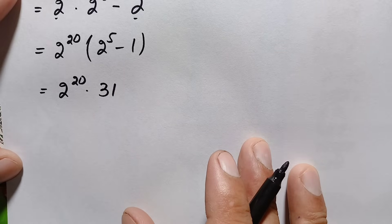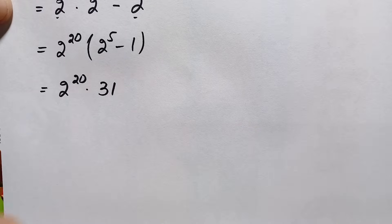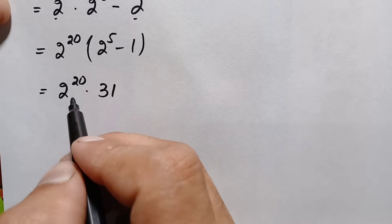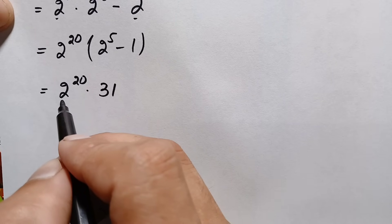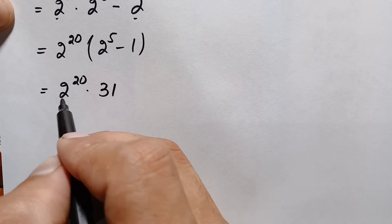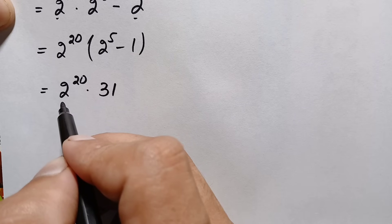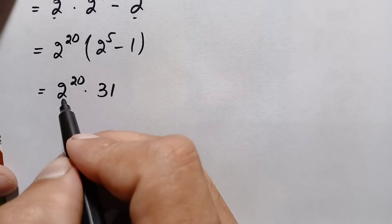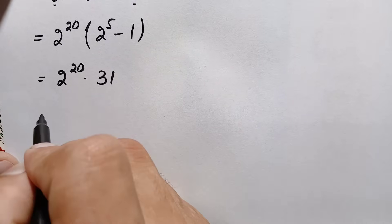Now we need to multiply these two numbers without a calculator. First we will find the value of 2 raised to power 20. We can find this value by multiplying 2 twenty times, but we can also find it using the algebraic identity (a plus b) whole square.